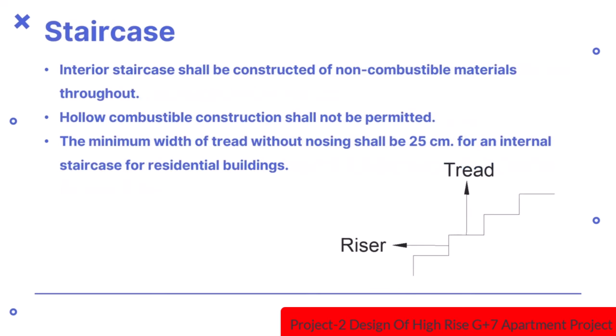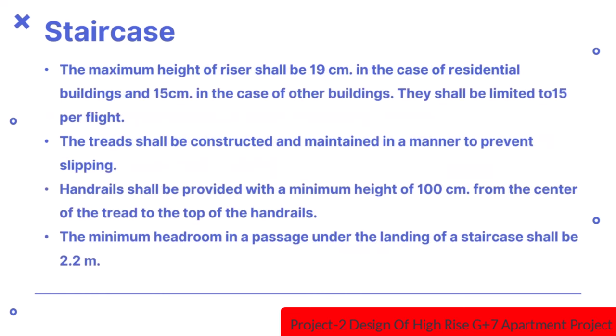The interior staircase shall be constructed of non-combustible materials throughout. Hollow combustible construction shall not be permitted. The minimum width of tread without nosing shall be 25cm for an internal staircase for a residential building. The maximum height of riser shall be 19cm in case of residential building and 15cm in case of other buildings. The treads shall be constructed and maintained in a manner to prevent slipping.